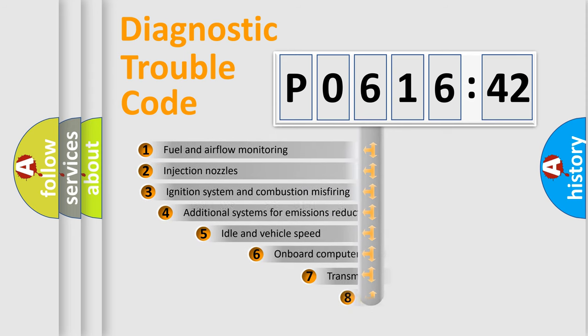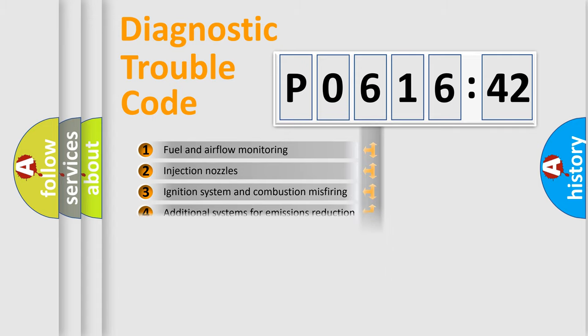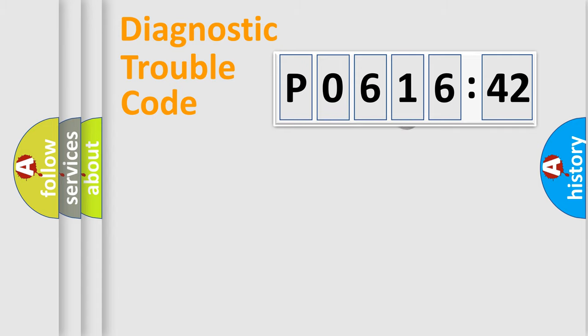The add-on to the error code serves to specify the status in more detail, for example, a short to the ground. Let's not forget that such a division is valid only if the second character code is expressed by the number zero.